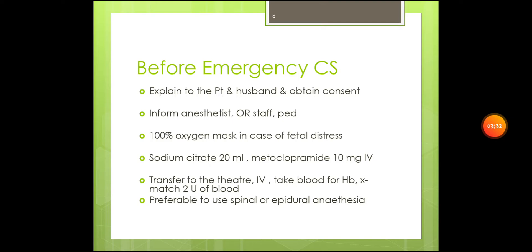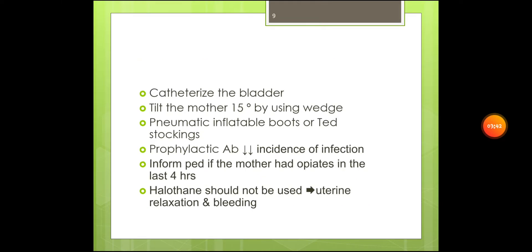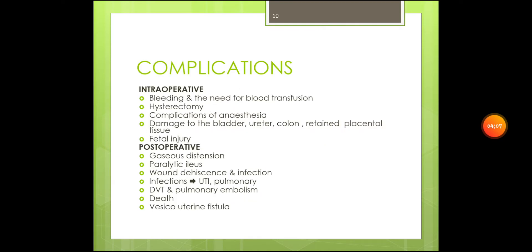IV lines should be established and then take blood for hemoglobin cross-match, two units of blood. It's preferable to use spinal or epidural anesthesia. Catheterize the bladder, tilt the mother 15 degrees using pneumatic inflatable boots or TED stockings. Then get prophylactic antibiotics to reduce the incidence of infection, inform pediatrics if the mother had opiates in the last four hours. Halothane should not be used because it causes uterine relaxation and bleeding.